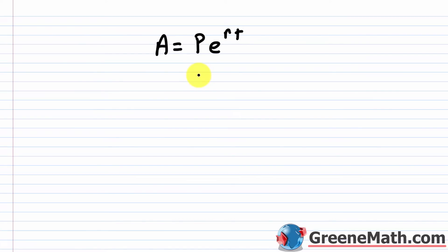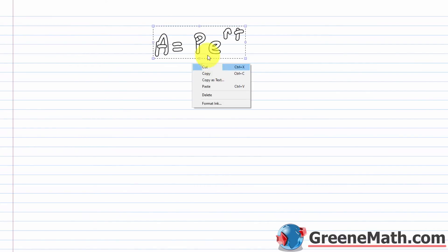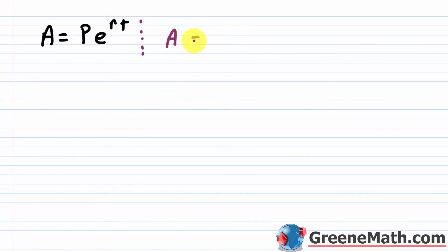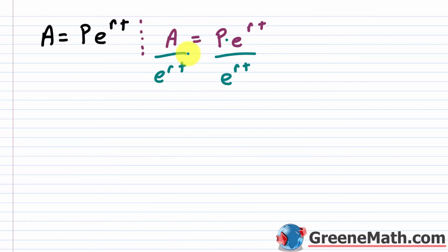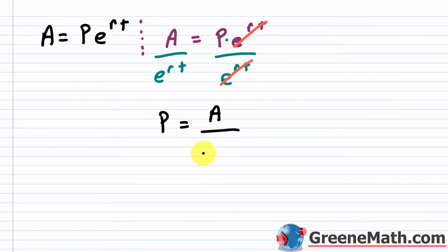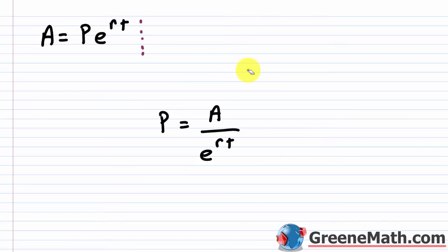You might have to solve this formula for P — for example, if a problem asks what's the principal. To solve for P, start with A equals Pe raised to the power of rt. Since Pe^(rt) is multiplication, divide both sides by e^(rt). That cancels, leaving us with the formula: P equals A divided by e raised to the power of rt, where A is the future value, r is the interest rate as a decimal, and t is time in years.